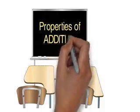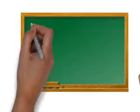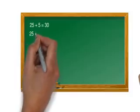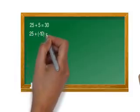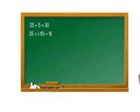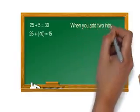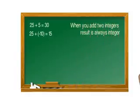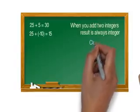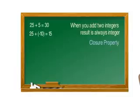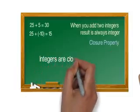Let's begin with the properties of addition. Consider this example: 25 plus 5 is equal to 30, and 25 plus minus 10 is equal to 15. So when you add two integers, the result is always an integer. This is called closure property.